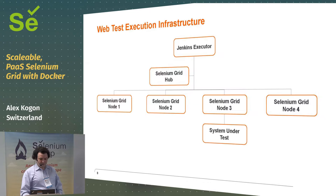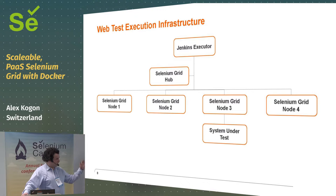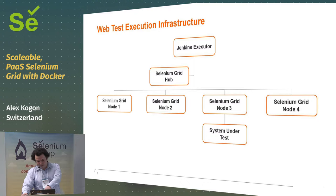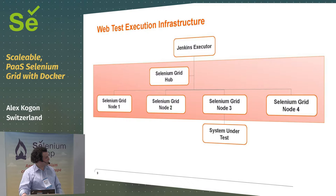We're here to talk about web test automation infrastructure. Generally when you're running your automated tests, you have your Jenkins executor up top — you have a whole lot of them running in parallel, and each of them is running a Selenium test. The Selenium test connects to the hub and says, I would like Firefox running on Mac OS X or whatever. The hub routes it to a node, and then that node's browser connects to the system under test. Today we're talking about the grid in the middle — it looks like the biggest part, but it's actually the least complicated part.